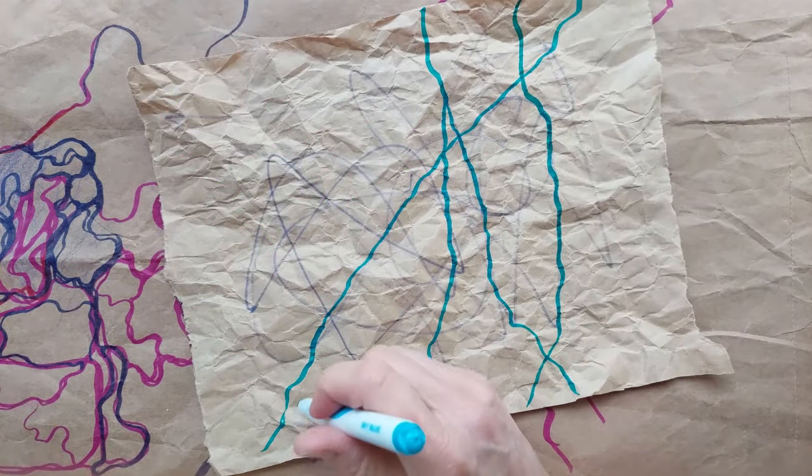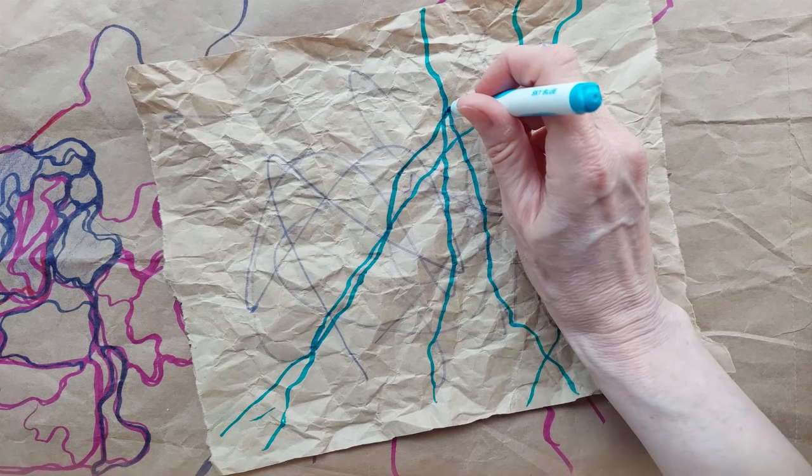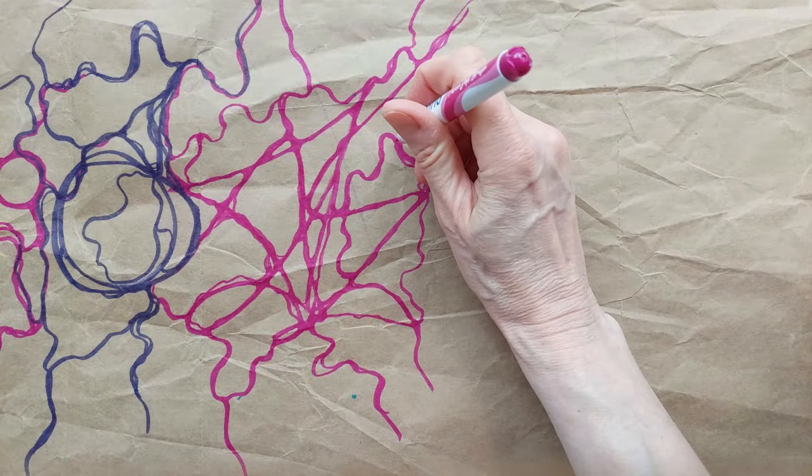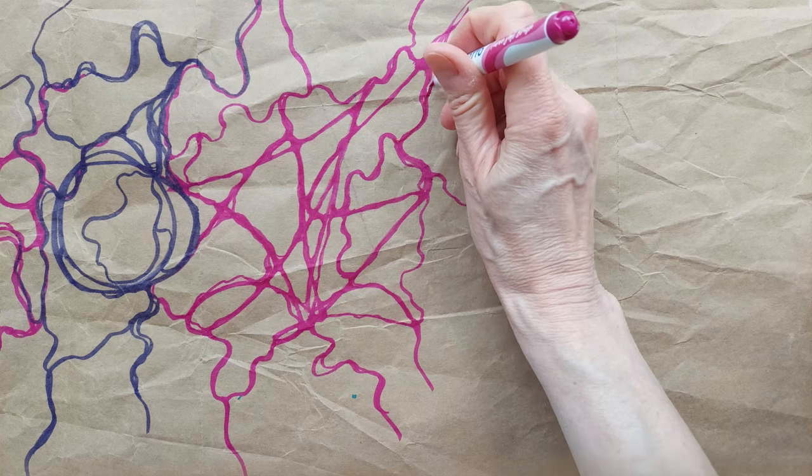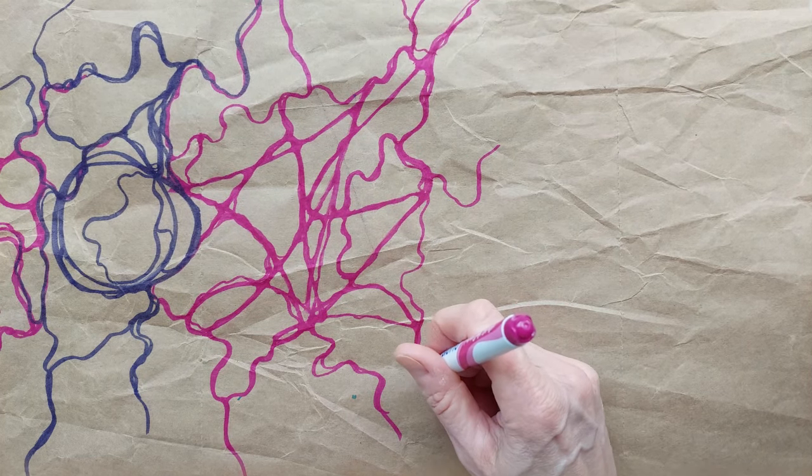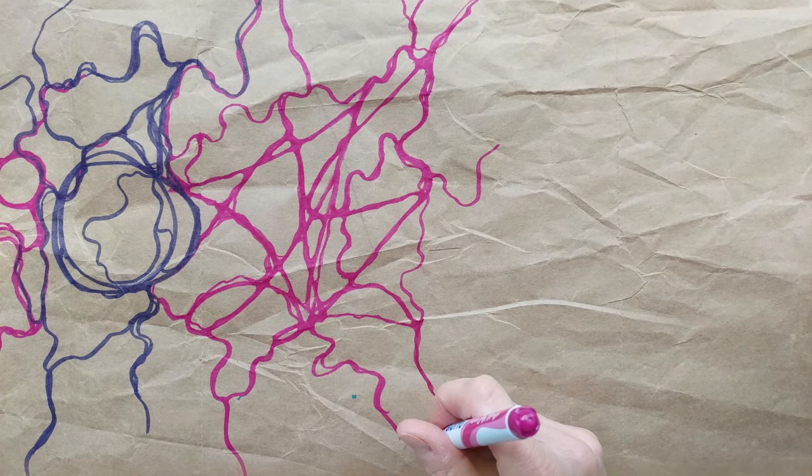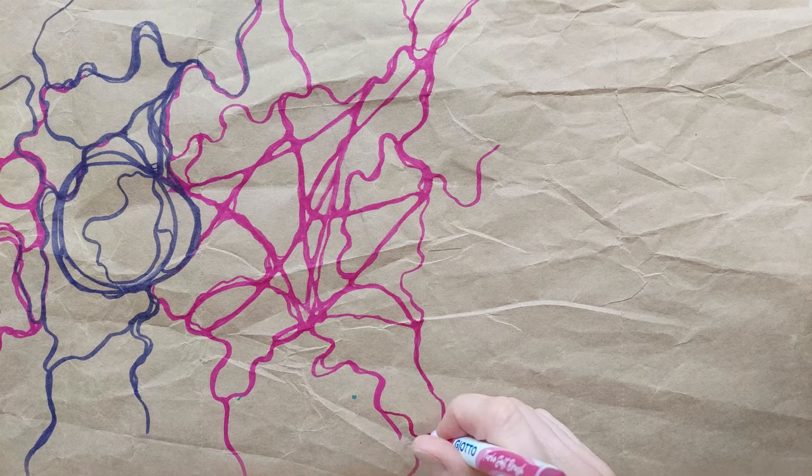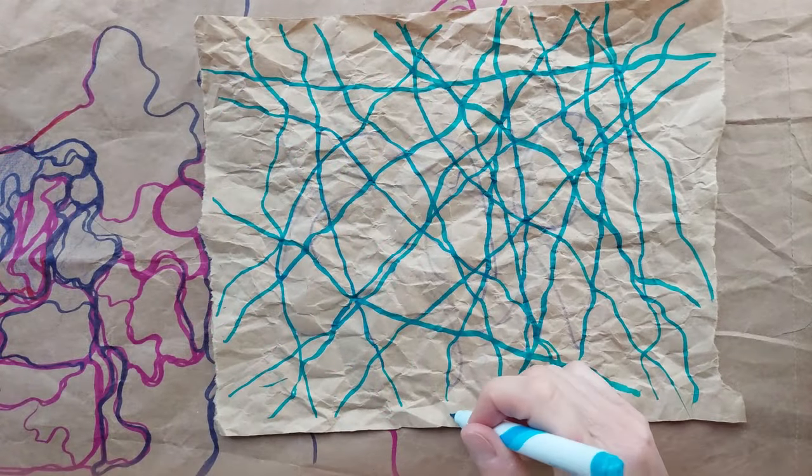Grace followed the instructions and began drawing neurographic lines consciously over the existing cathartic scribble. As she watched the video, a sense of calm washed over her. The fluid movements of the artist's hands, the soothing voice, and the encouraging tone all pleasantly affected her.